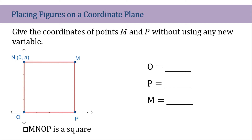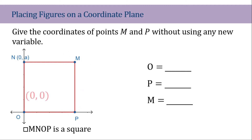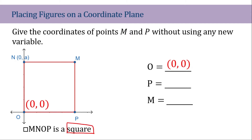Problem number 1: Give the coordinate points of M and P without using any new variables. We're going to find the coordinate midpoints of these two points. We know that point O is (0, 0). To give the coordinate points of P, we need to remember that this is a square, meaning it has the same measurements of sides.